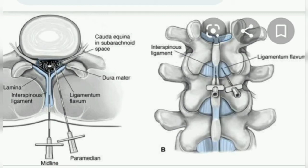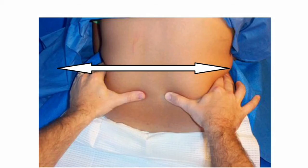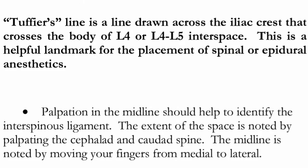By proper positioning, you should have access to L2-L3, L3-L4, L4-L5, and L5-S1. Identify the top of the iliac crest. Tuffier's line generally corresponds with the fourth lumbar vertebra. Tuffier's line is a line drawn across the iliac crest that crosses the body of L4 or the L4-L5 interspace. This is a helpful landmark for the placement of spinal or epidural anaesthetics. Palpation in the midline should help to identify the interspinous ligament. The extent of the space is noted by palpating the cephalad and caudad spine. The midline is noted by moving your fingers from medial to lateral.